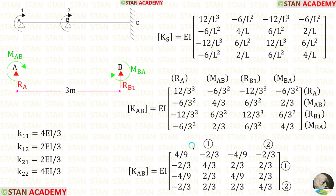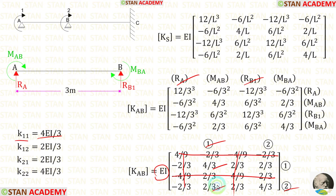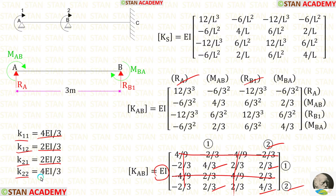We strike out unwanted rows and columns: cut row 1 and column 1 (for RA), and cut row 3 and column 3 (for RB1). The remaining stiffness elements for span AB are: K11 = 4EI/3, K12 = 2EI/3, K21 = 2EI/3, and K22 = 4EI/3.